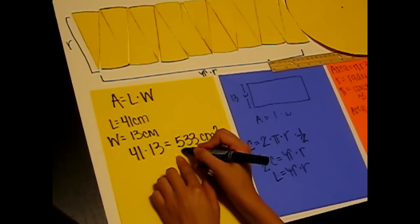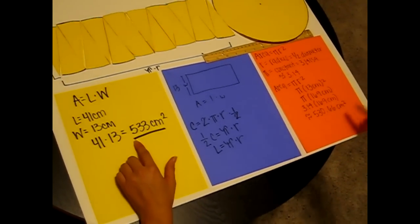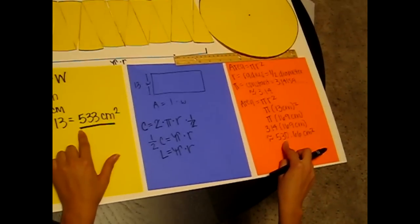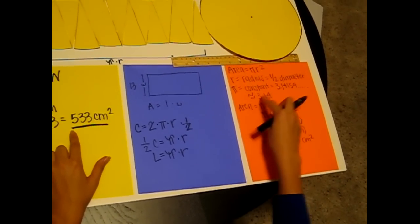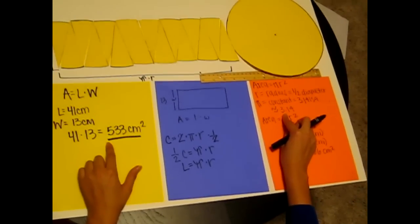You will notice that the answer to the area of the rectangle is actually very close to the area of the circle. There is a slight difference, and this is because we rounded our pi at the beginning of this problem.